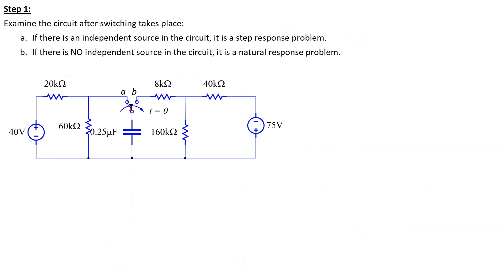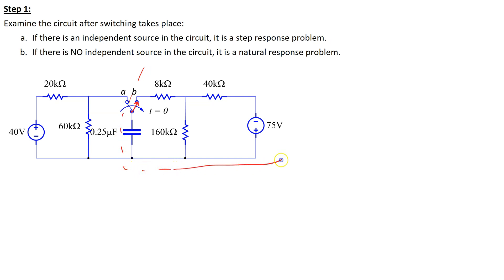The first step is to determine whether we are solving for the natural or the step response. In this given circuit, the switch is at position A for a very long time and then moves to position B at time t equals zero. We need to examine the circuit after switching takes place. If there is an independent source in the circuit after switching, then we are solving for the step response. If there is no independent source, then we are solving for the natural response. After switching, the switch is in position B, and we can see that there is an independent source in this circuit. This means we are solving for the step response of an RC circuit.